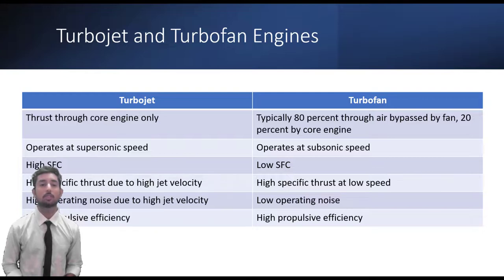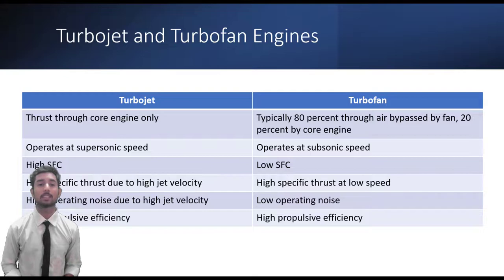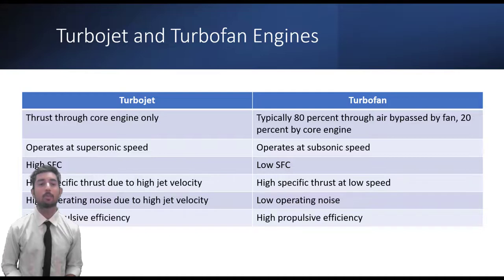The engine produces thrust through a combination of the jet and fan portions working together. Engines that use more jet thrust relative to fan thrust are known as low bypass turbofans; conversely, those with considerably more fan thrust than jet thrust are known as high bypass turbofans. Most commercial aviation jet engines used today are of the high bypass type, and most modern fighter engines are low bypass. Afterburners are used on low bypass turbofan engines, with bypass and core streams mixing before the afterburner.